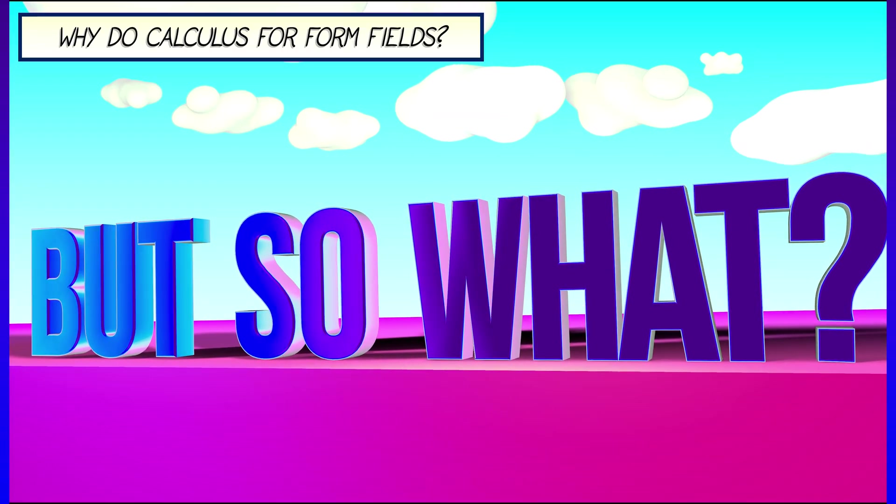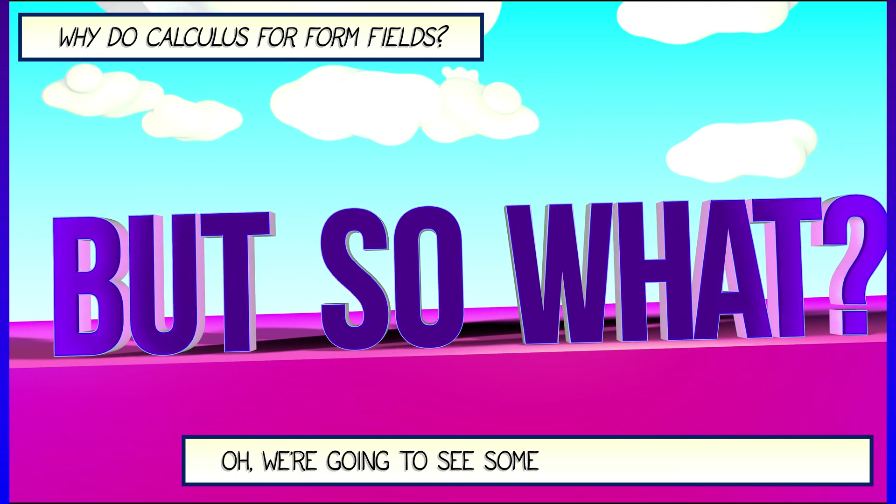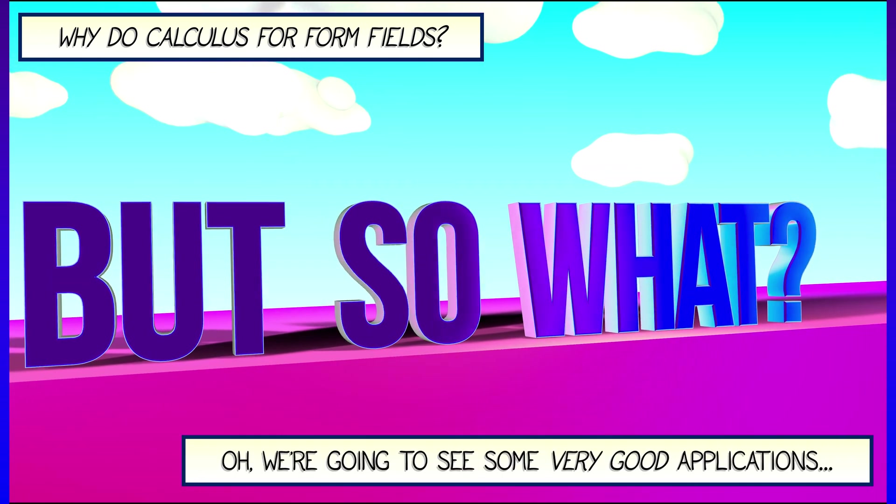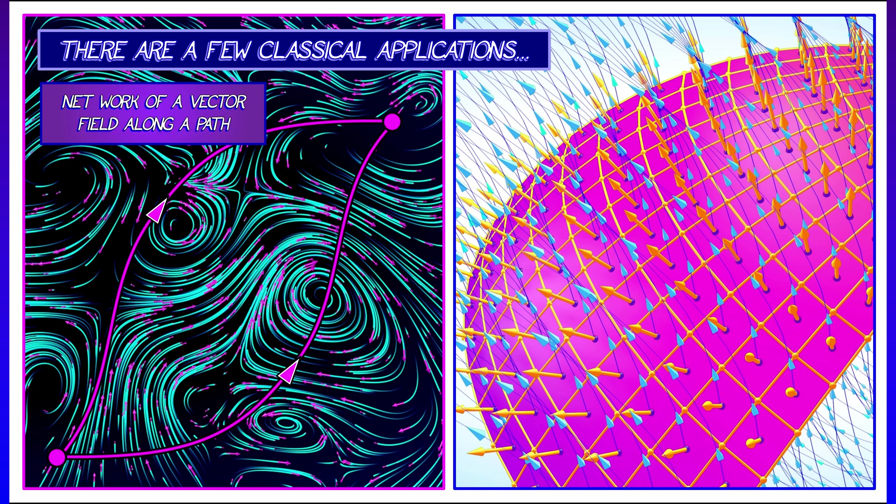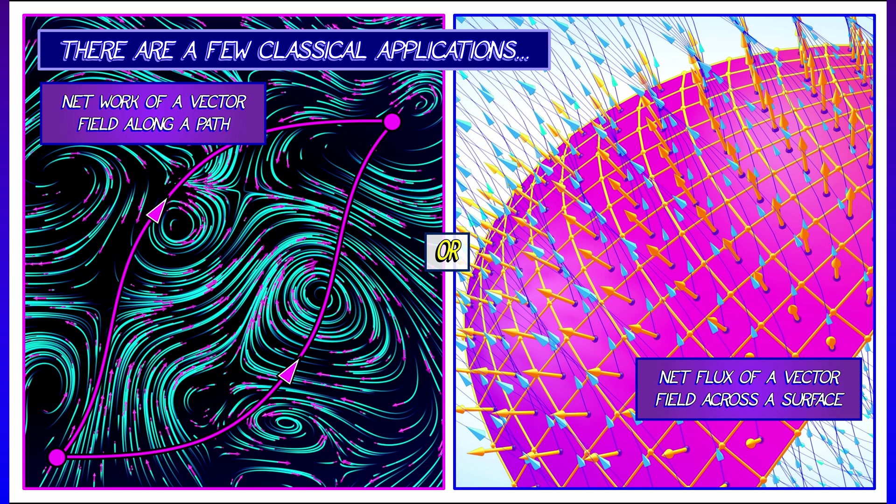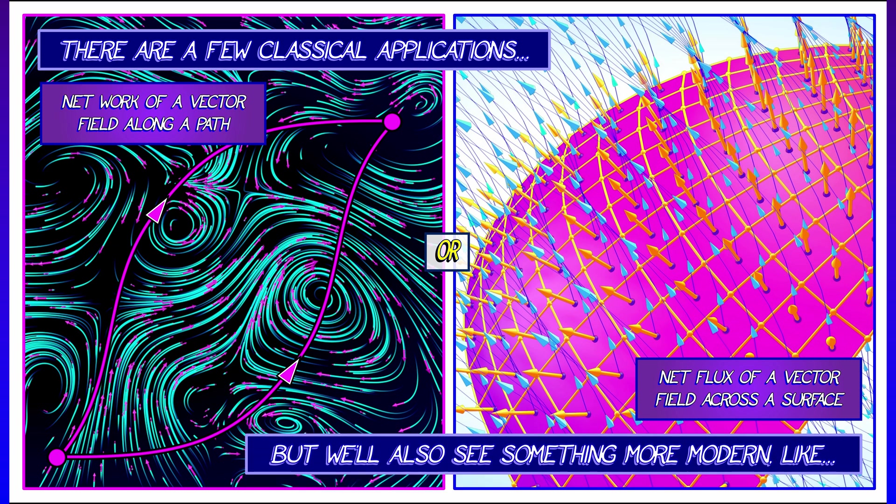Now, at this point, you may be wondering, so what? Why all this trouble with form fields? Oh, we're going to see some very nice applications. Some of the applications are going to be pretty classical. Things like computing work along a path done by a vector field or looking at the flux of a vector field across a surface. That's the basics, but we're also going to see some more advanced or modern applications.